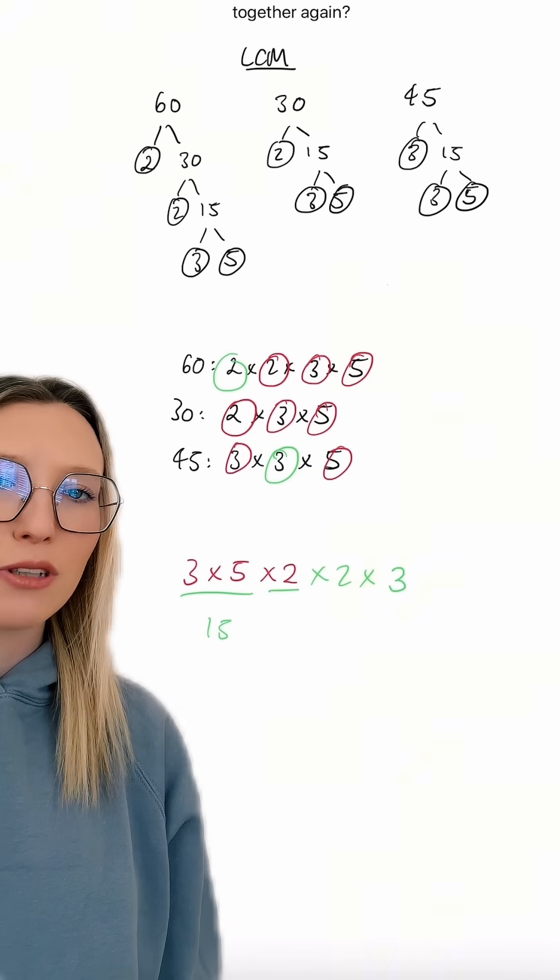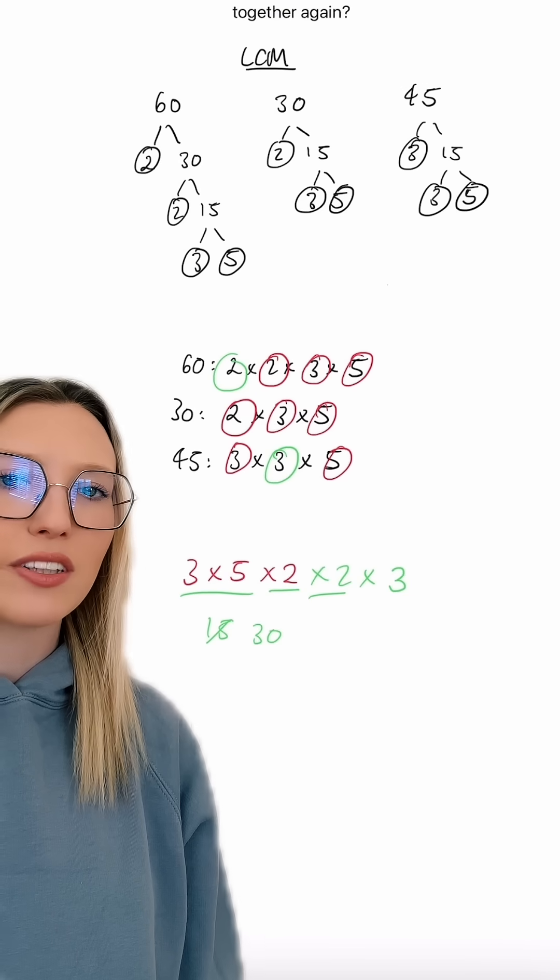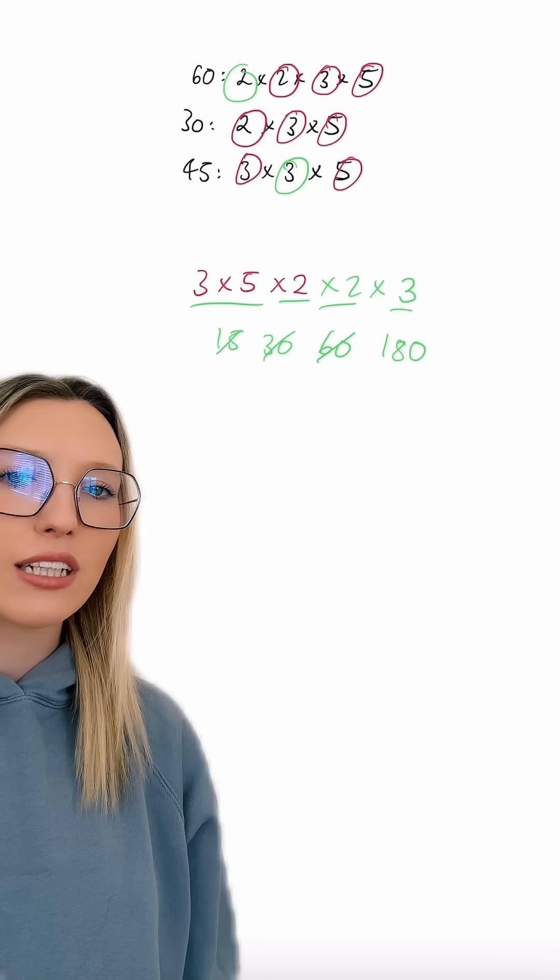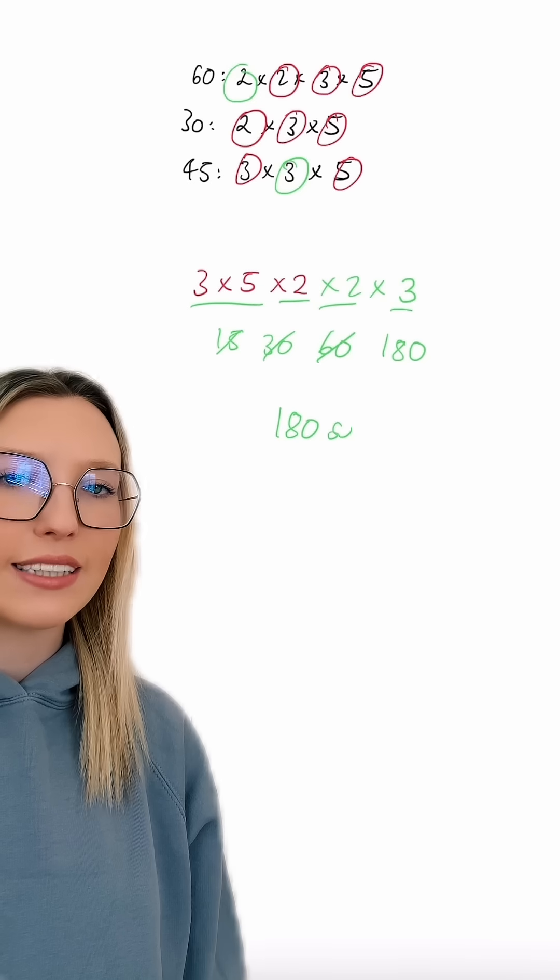So we get 3 times by 5 which is 15, multiplying that by 2 gives us 30, multiplying by 2 gives us 60, multiplying by 3 gives us 180. So they're going to ring together every 180 seconds.